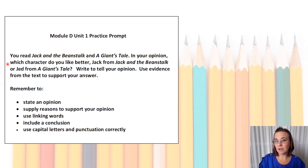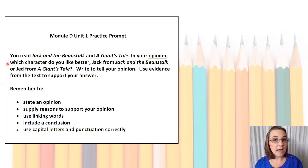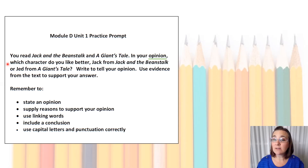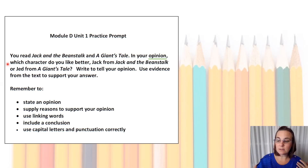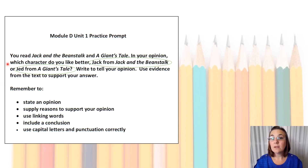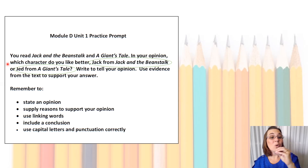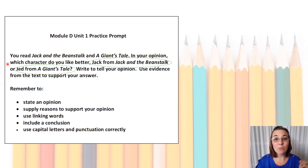Let's talk through some of the parts of this prompt so that we know exactly what we're writing about. First, it says 'in your opinion.' That tells me that this is going to be an opinion writing, just like we've been practicing — I'm going to tell someone what I think, feel, or believe about the topic. So what is the topic? It says Jack from Jack and the Beanstalk or Jed from A Giant's Tale. We're going to pick one of those — that's the topic we'll write about.